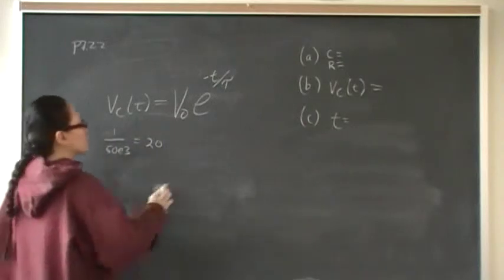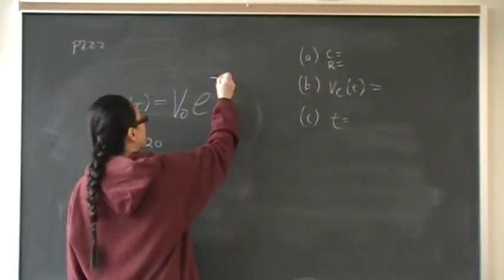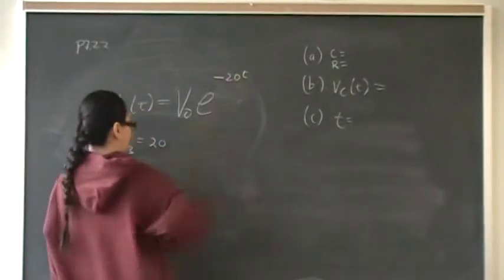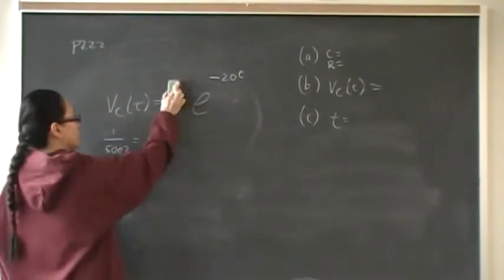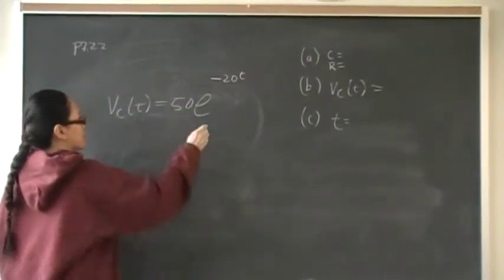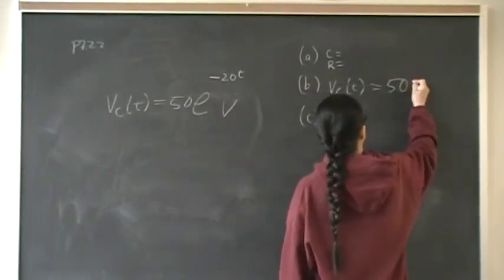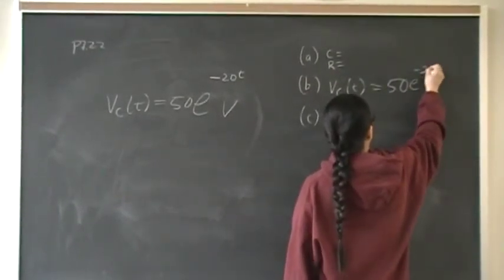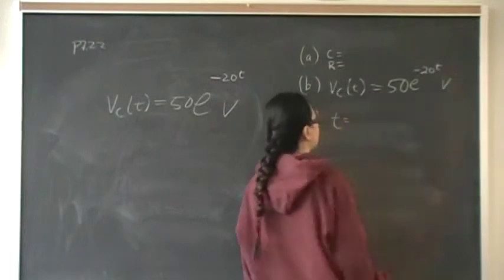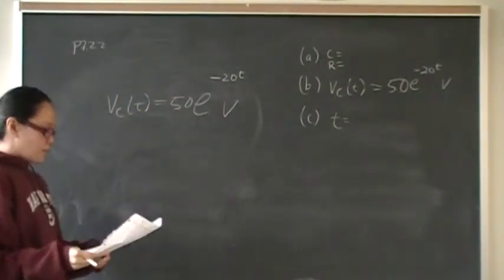So 1 over 50E-3 is 20. So I'm going to replace this with negative 20T. And the initial voltage they gave to me, they said that was 50. And that is the answer for part B. 50E to the negative 20T volts is the general equation.